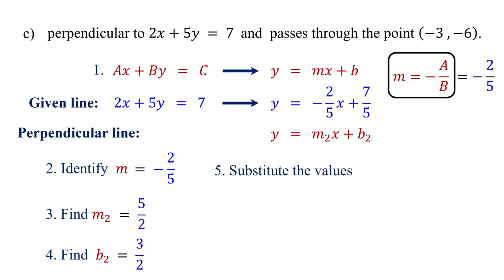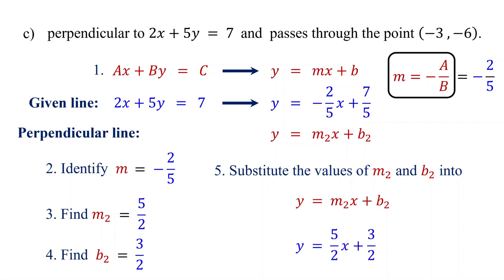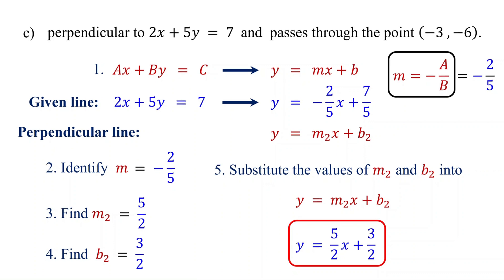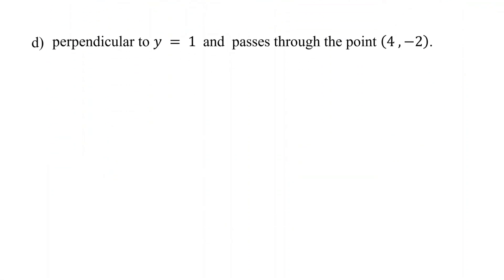Finally, substitute the values of m2 and b2 back into y equals m2x plus b2. Replace m2 with 5 halves and b2 with 3 halves. This is the equation of the perpendicular line in slope-intercept form. To learn how to write the equation of a line that is parallel to a given line and passes through a given point, check the link in the description. But first, let's work on cases where the given line is horizontal or vertical.